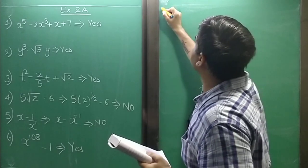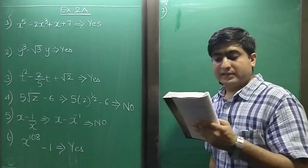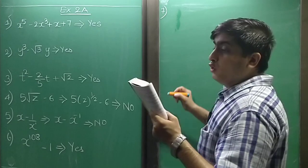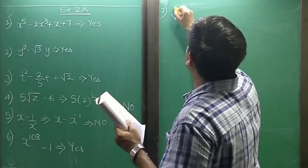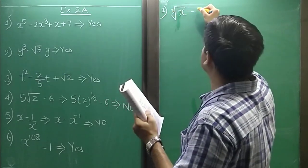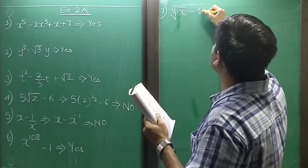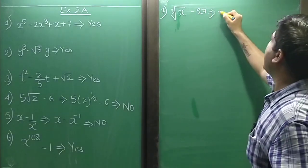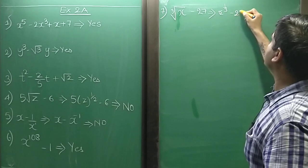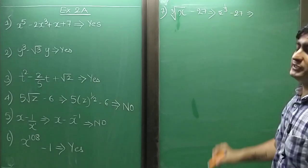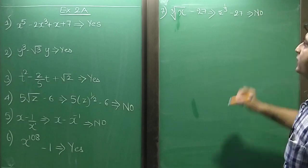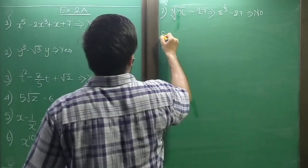Sum 7: cube root of x minus 27. This can be written as x raise to power 1/3 minus 27. Since 1/3 is not a whole number, it is not a polynomial.